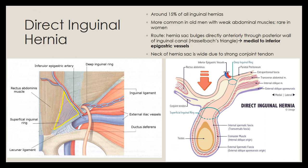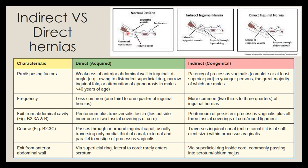Comparing indirect and direct hernias: indirect hernias project through the deep inguinal ring into the inguinal canal, passing lateral to the epigastric vessels, whereas direct hernias project directly through the abdominal wall medial to the epigastric vessels. Predisposing factors for direct hernias include weakness of the anterior abdominal wall in the Hesselbach's triangle region, distended superficial ring, or aponeurosis attenuation in males over 40. Indirect hernias are congenital, due to a patent processus vaginalis, and occur more commonly in younger males.